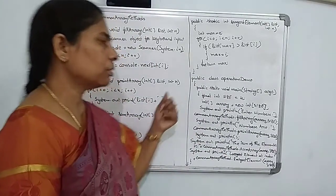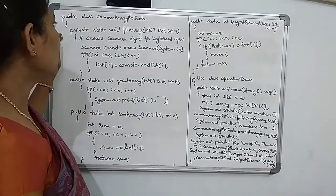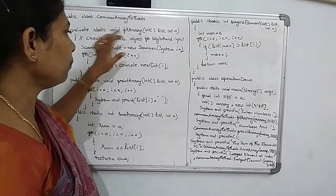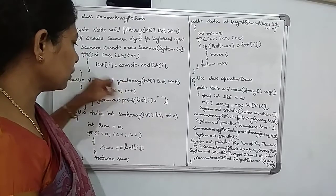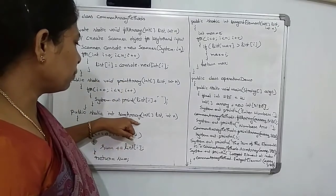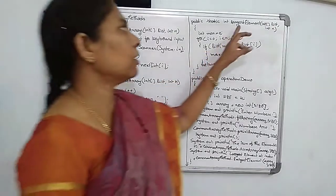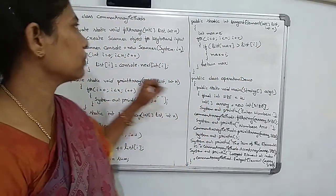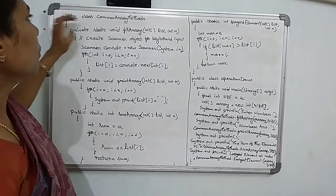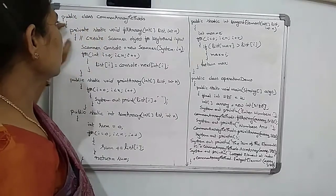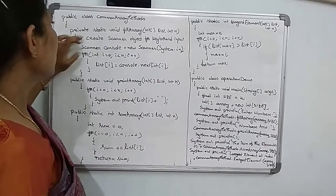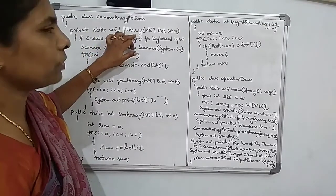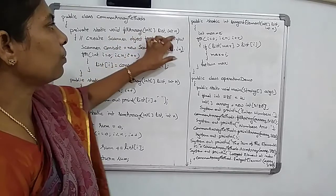This is the example for these operations. The array operations are stored in the class CommonArrayMethods. The method fillArray means reading the elements into the array. printArray means printing the elements of the array. sumArray means sum of array elements. And findLargest finds the largest element in the array.